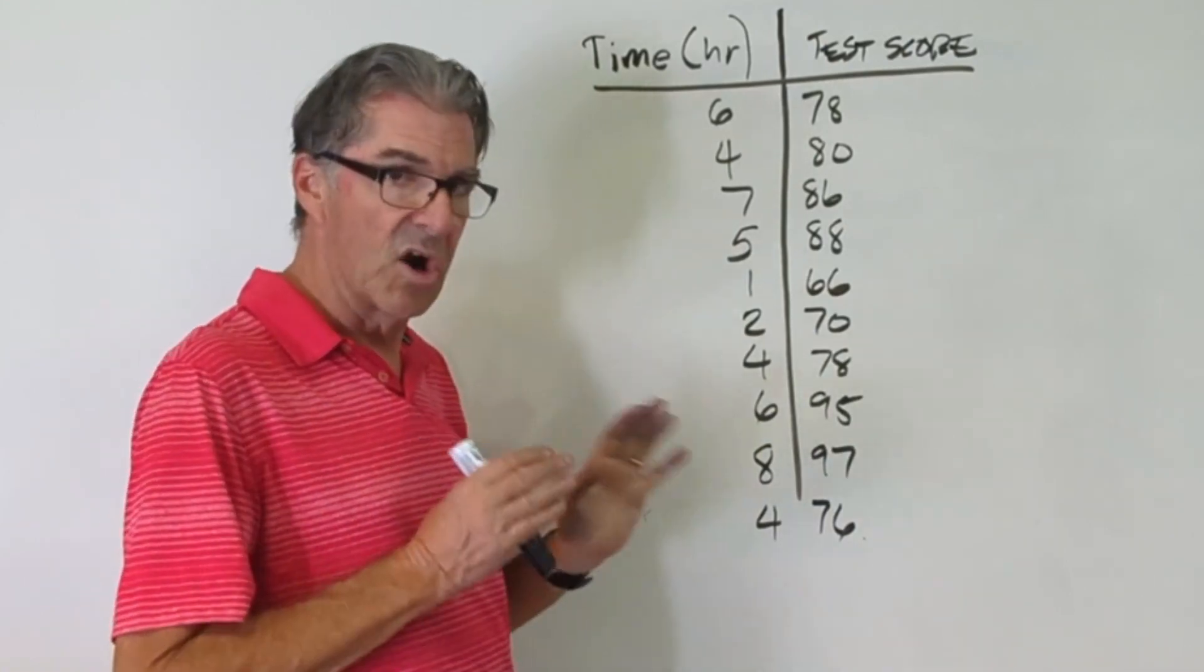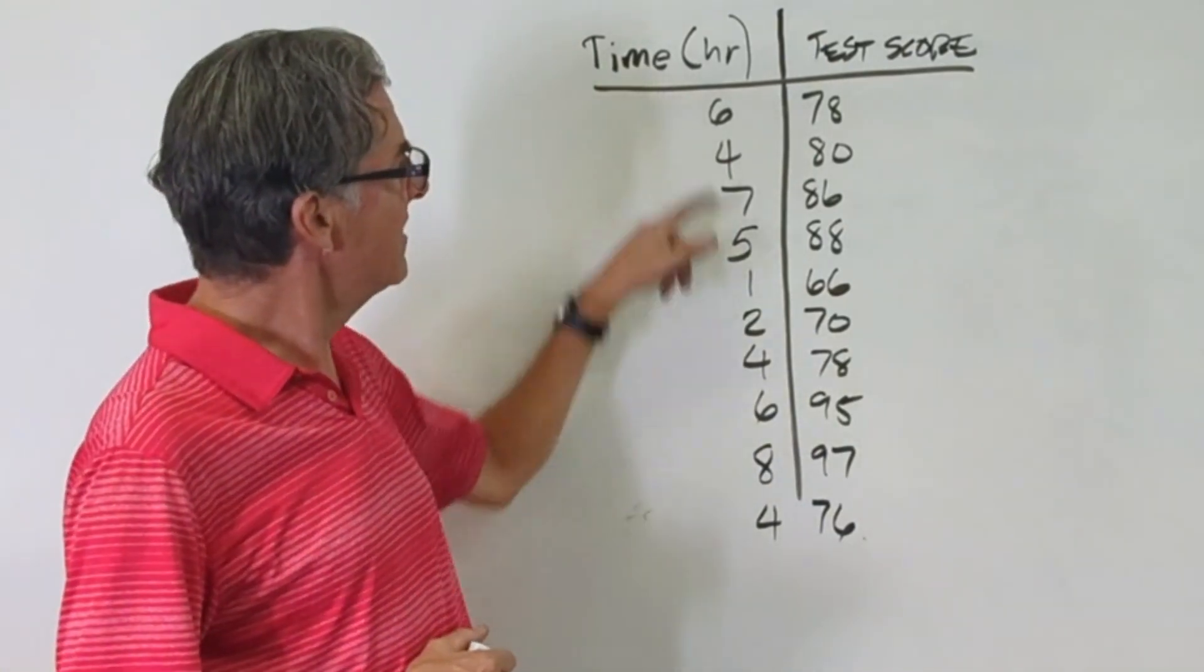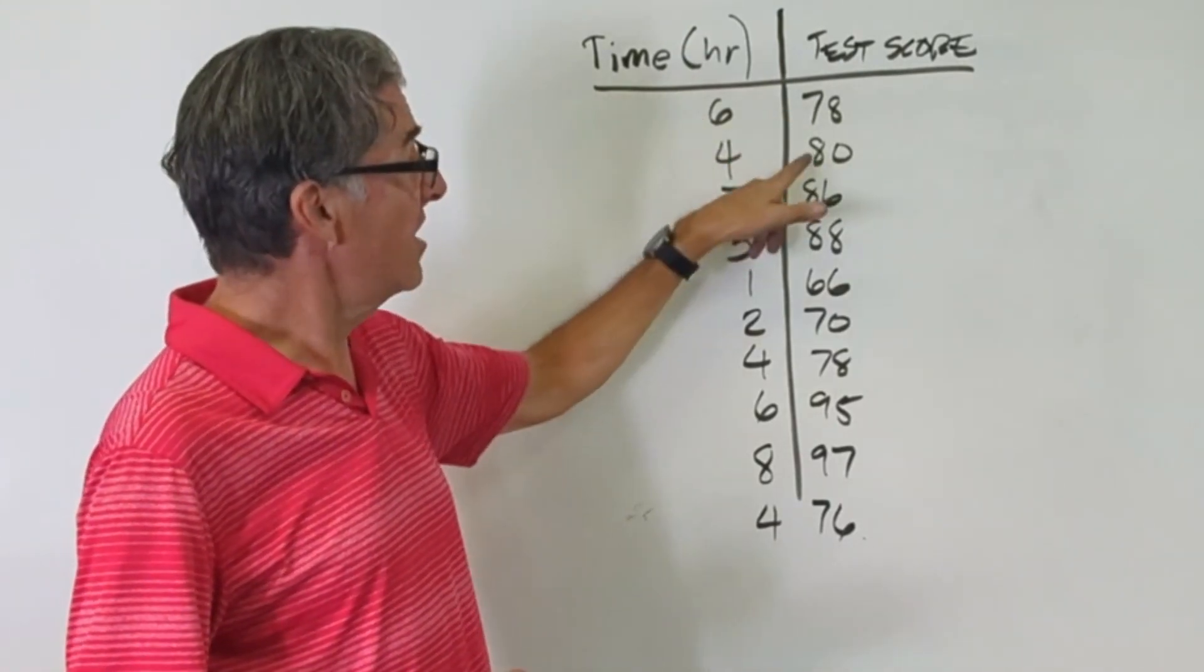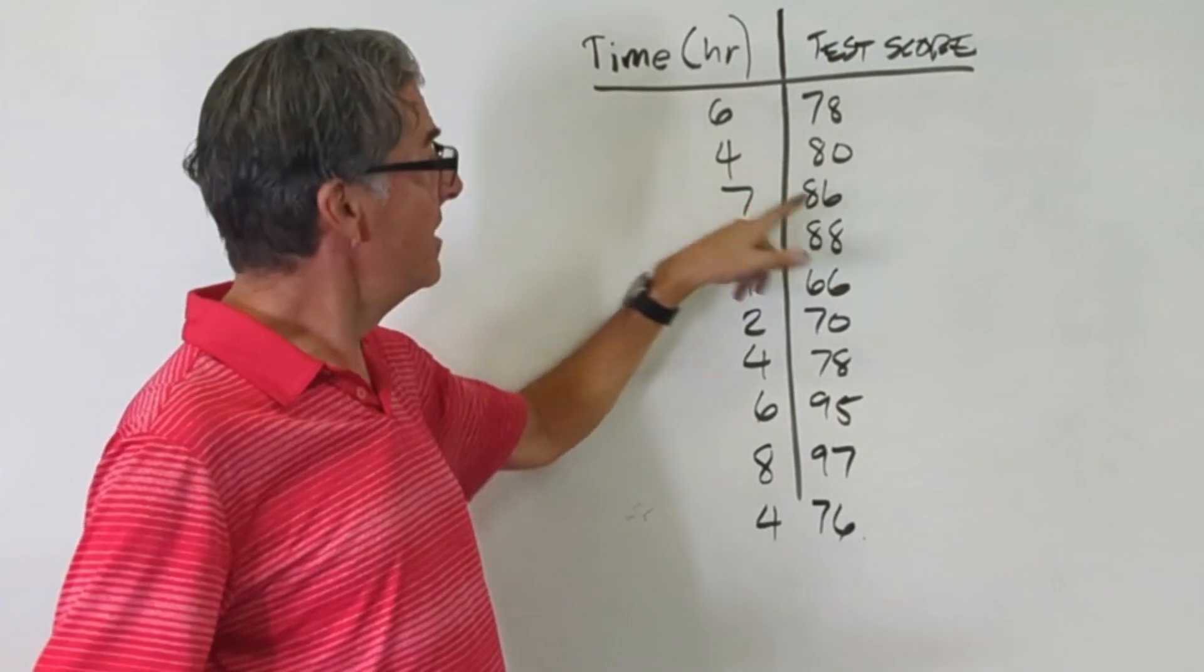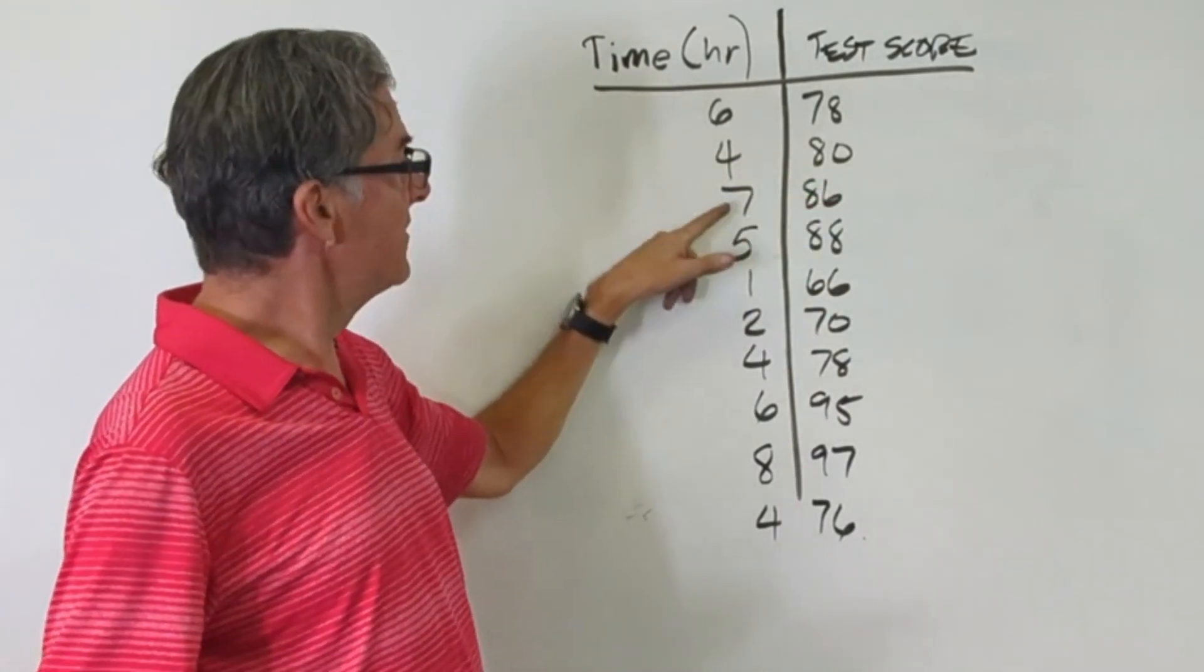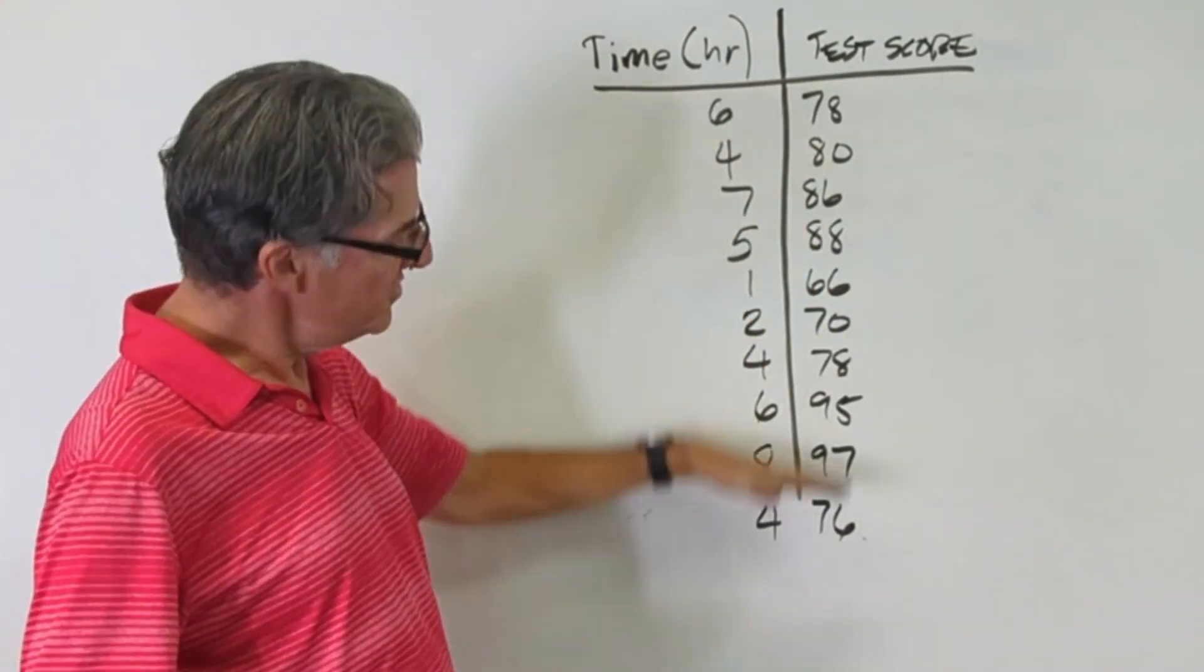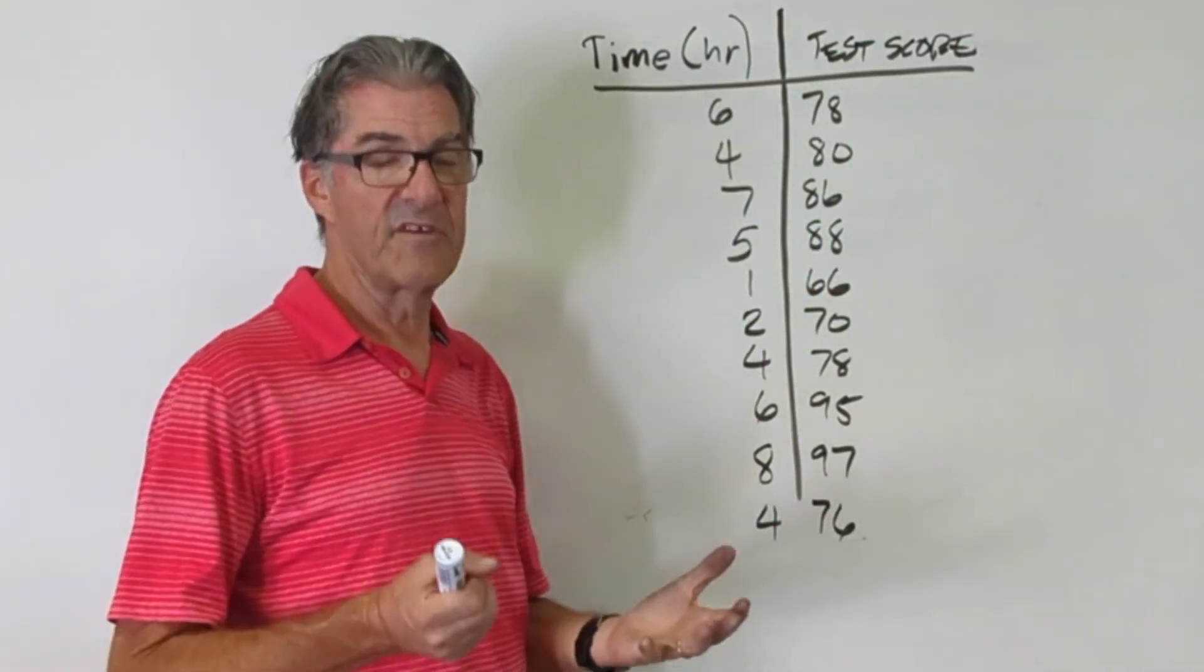And if you snoop on this data, you're going to notice it's not a perfect correlation in that this person studied six hours, got a 78. This one studied two hours less but got 2% more. This person studied seven hours and only got 6% more than that person and so on. So you can see that this data is not going to make a perfect line.